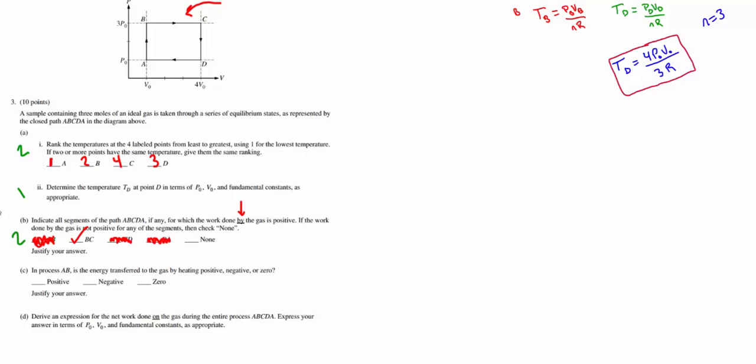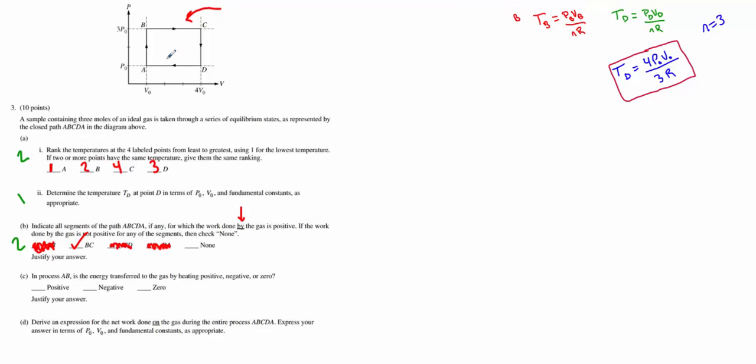Process AB is the energy transferred to the gas by heating positive, negative, or zero. So let's look at AB. We know that the temperature increases. Why do we know the temperature increases? Well, again, if we imagine these isotherms back here, B is at a higher isotherm than A. Also, we can just refer to A1. We know B is a higher temperature than A is. Because the temperature is going up, and there is no work being done on or by the gas, the heat needs to be put into the system to increase its temperature, so it's positive.